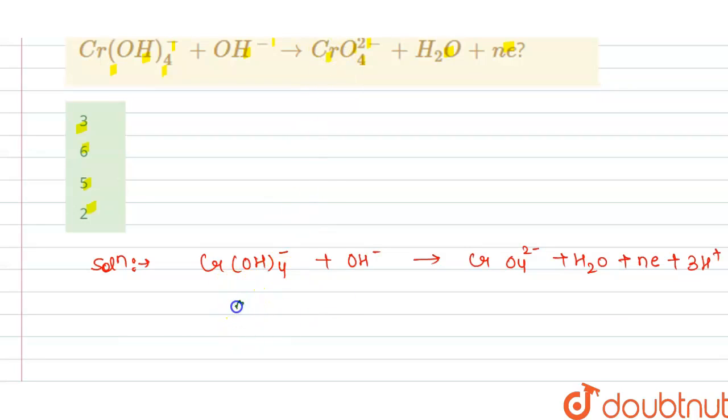...by finding the charge on LHS (left hand side), that is -1 - 1 = -2. Similarly, we find the charge on right hand side, so this is -2...